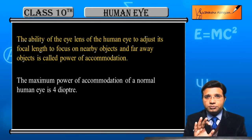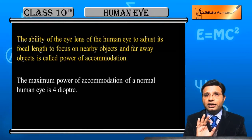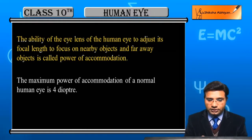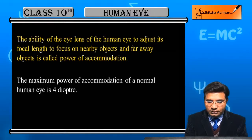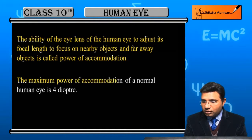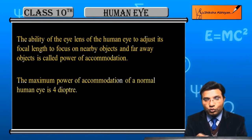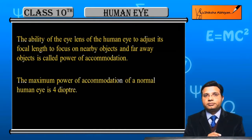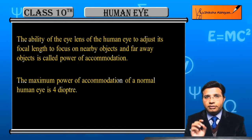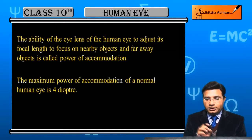अब इस power of accommodation की maximum value क्या होती है — the maximum power of accommodation of a normal human eye is 4 diopter। इसकी maximum value है 4 diopter।